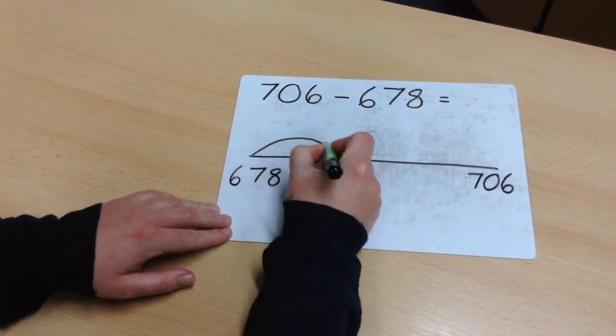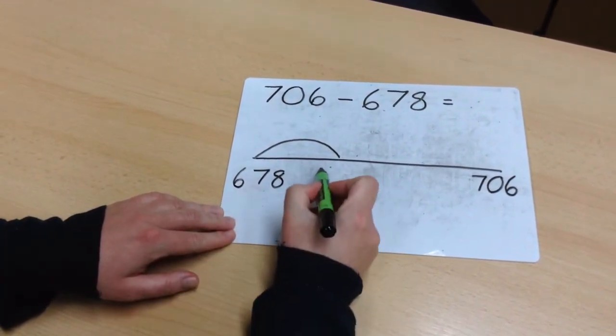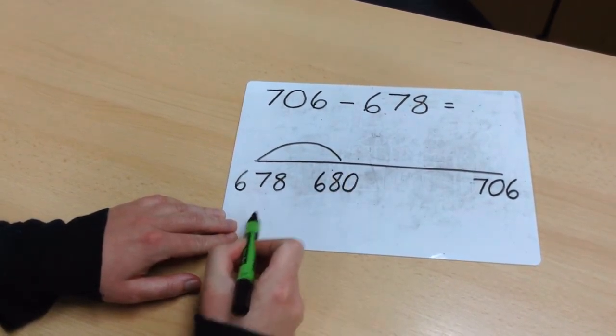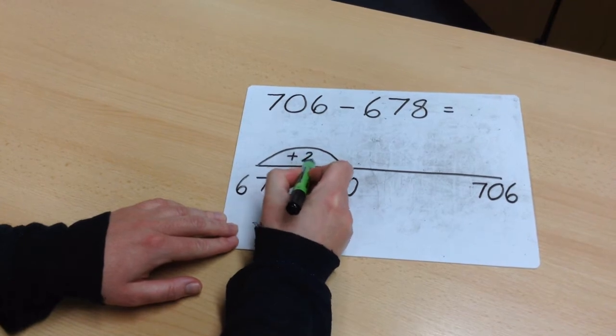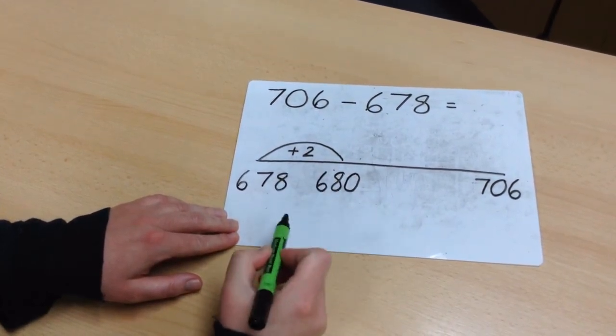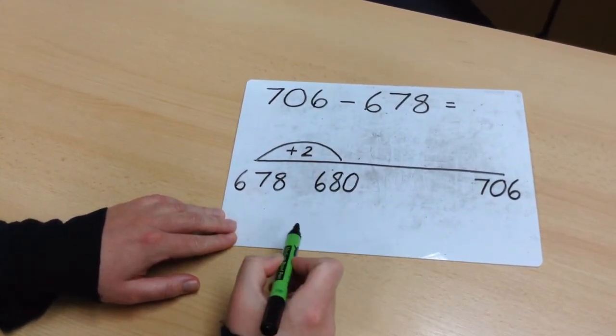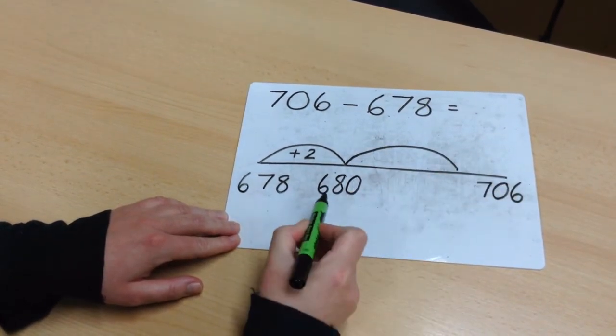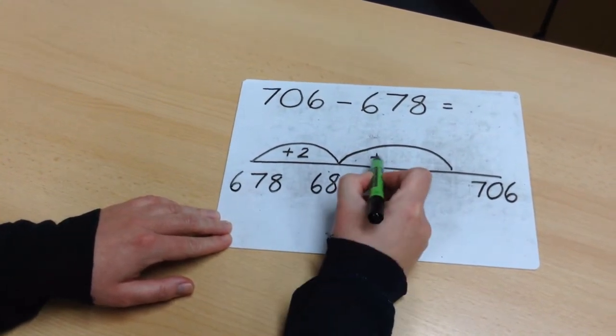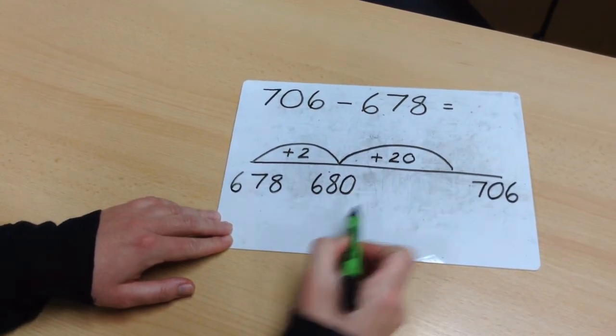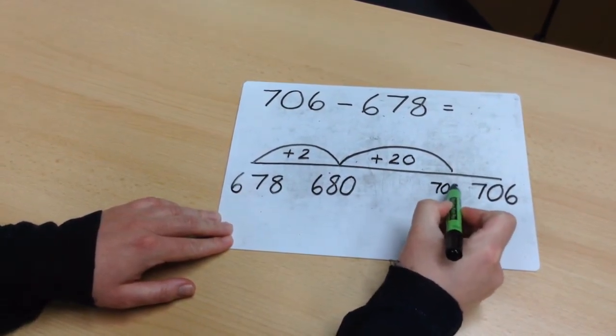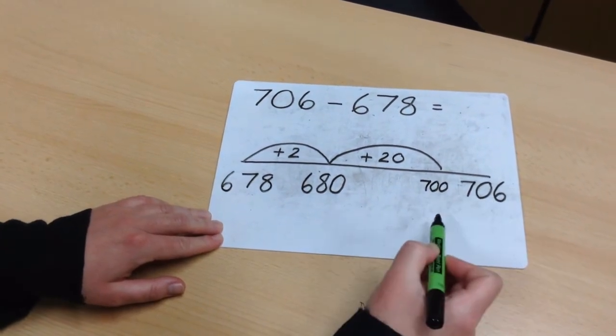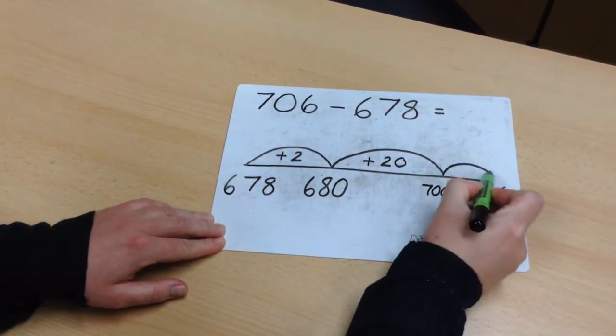The first number I'm going to jump to is going to be 680, a multiple of 10. I've added 2 to get there. I'm now going to try and get to the next multiple of 100, which is 700. I need to add 20 to get to 700. I'm nearly there. The difference between 700 and 706 is 6.